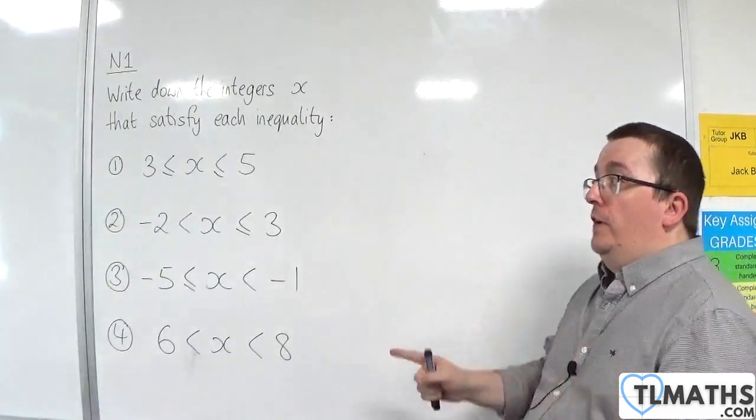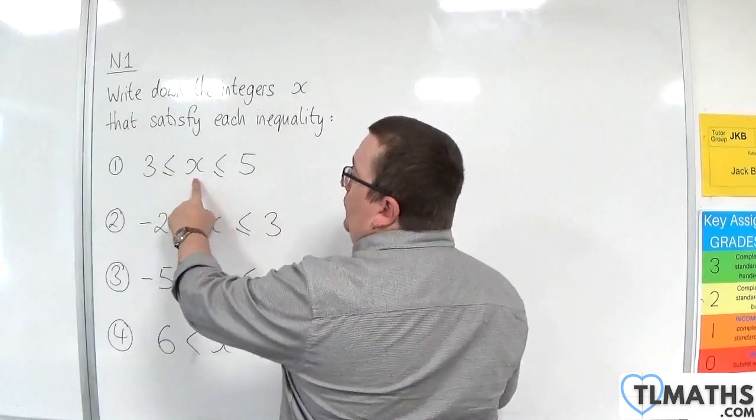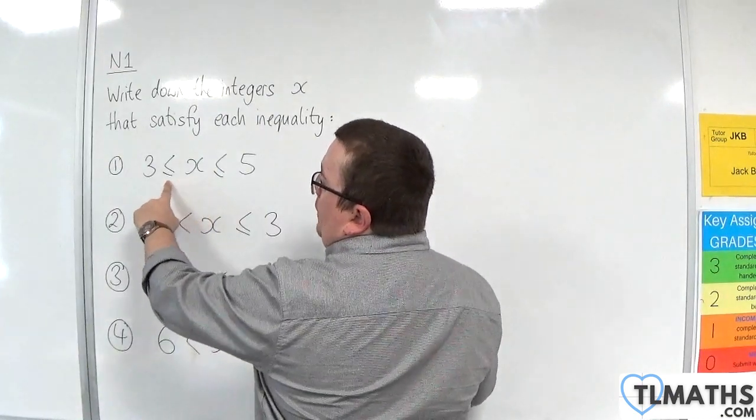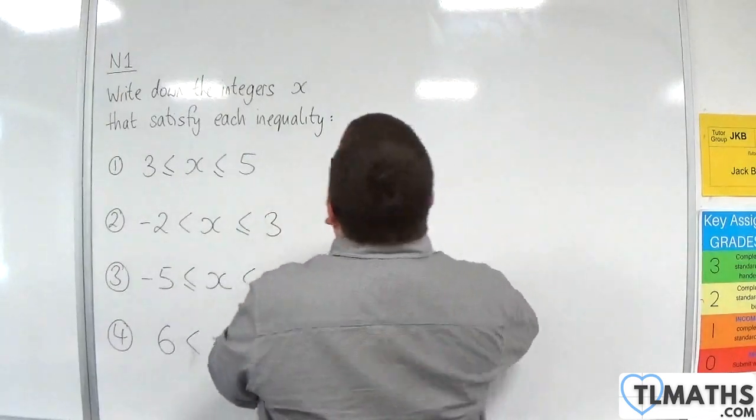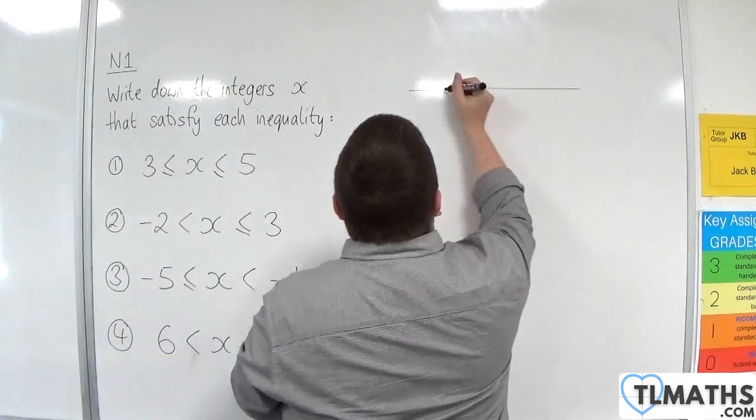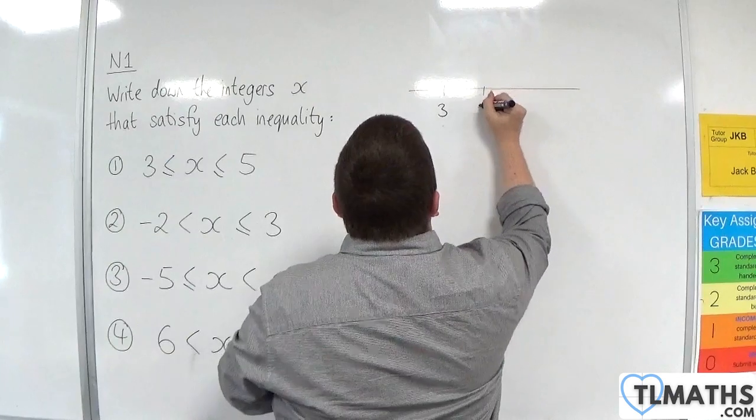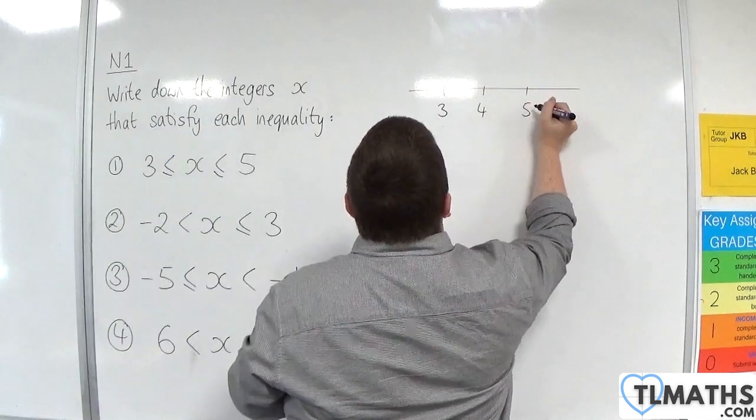So for the first one, x must be greater than or equal to 3, but less than or equal to 5. So if you thought about it on a number line, here is 3, here is 4, here is 5.